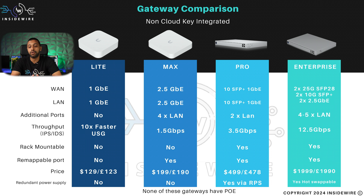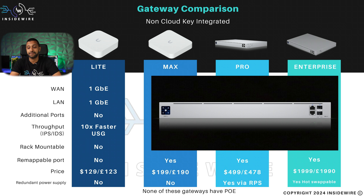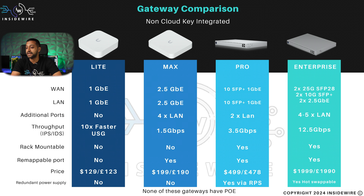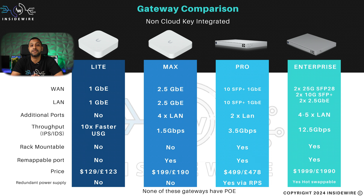Moving on to the Gateway Pro — this is for a slightly bigger office, maybe a small to medium-sized business. It comes with a 10 gig SFP+ and one gigabit WAN port, and a 10 gig SFP+ and one gigabit LAN port. The throughput improves to three and a half gigabits per second. It's rack mountable, you can remap ports for dual WAN capabilities. The price jumps significantly to $499 or £478, and it does have a redundant power supply, though you need to buy the UniFi RPS separately.